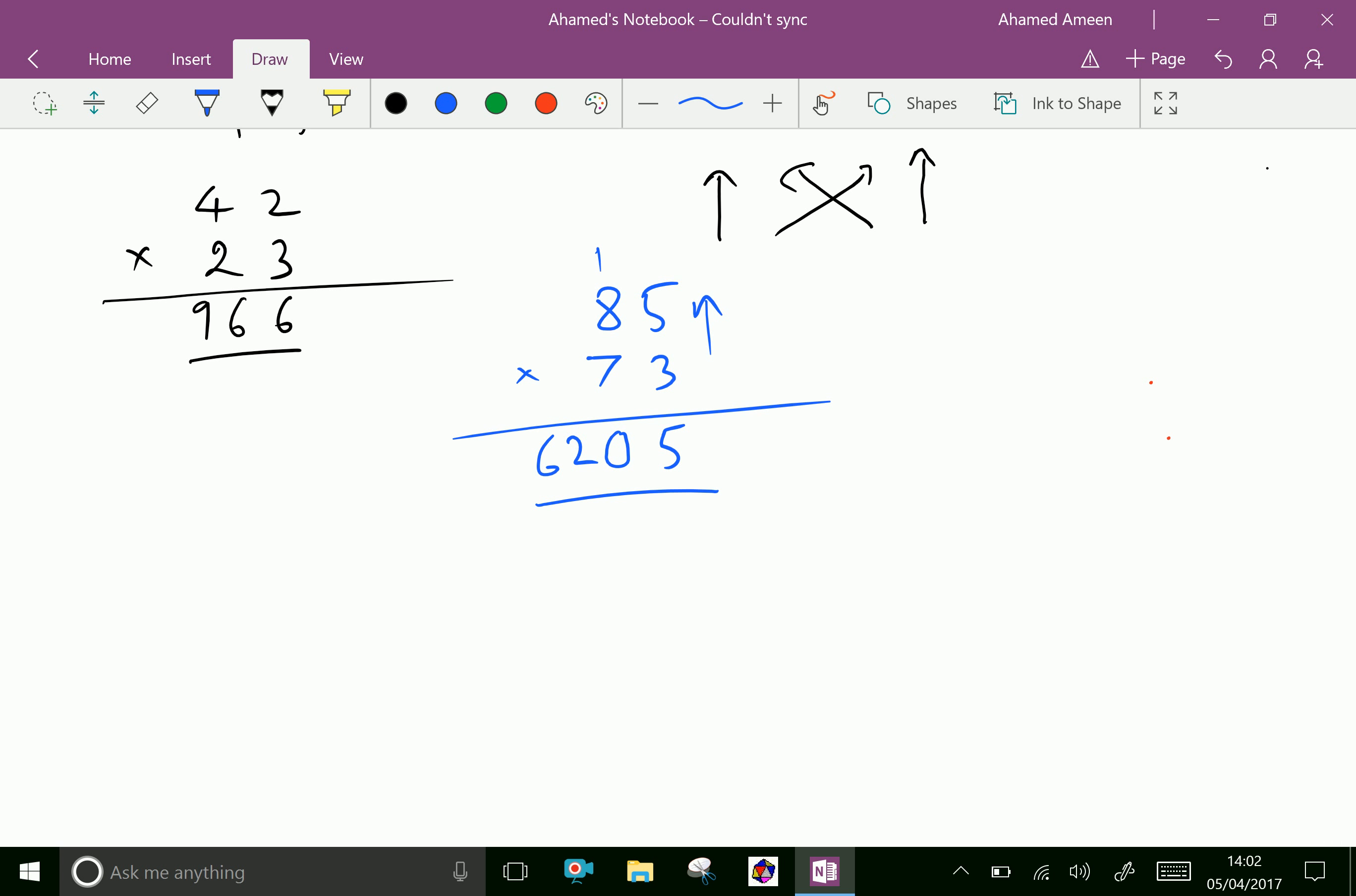Look at one more number: 49 times 28. 9 times 8 is 72, put 2 and 7 carries. 4 times 8 is 32, 32 plus 7 is 39. 2 times 9 is 18, 18 plus 39 is 57.